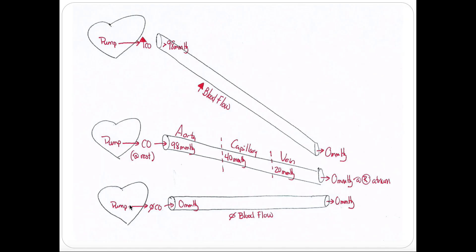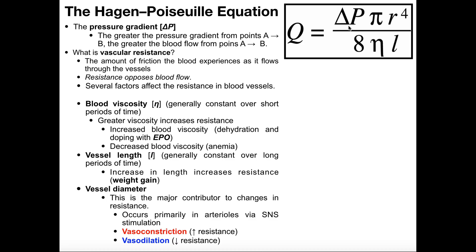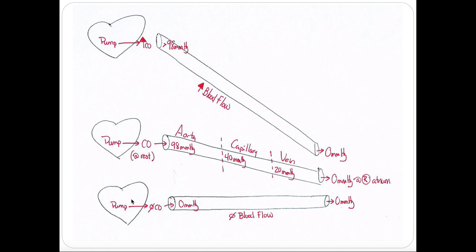Let's look at the bottom case first. These are mean arterial pressures. Let's say the pressure in the aorta was zero millimeters of mercury, and the pressure at the right atrium is also about zero. There is no difference — it's zero initially and zero finally — so the pressure difference is zero. If we plug zero in for delta P, there would be zero blood flow. In other words, if the heart was not pumping at all and generating no pressure near the aorta, you have no blood flow.